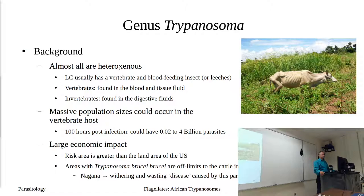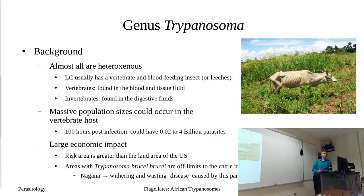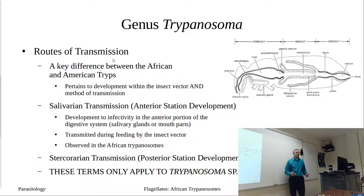We're going to split trypanosomes into African and American trypanosomes. You can't get Trypanosoma brucei brucei subspecies, but there is Trypanosoma brucei that we could get. It causes this wasting disease, making it hard to raise food animals in these areas. We split African and American trips based on the route of transmission because they exhibit different pathways.